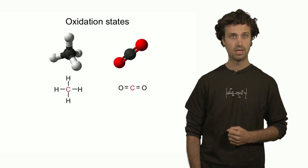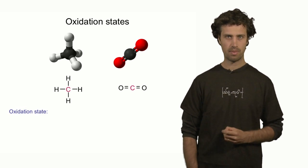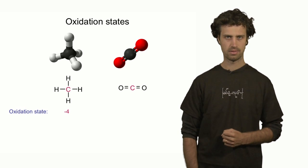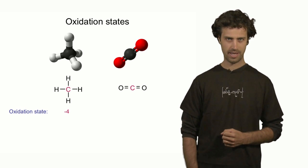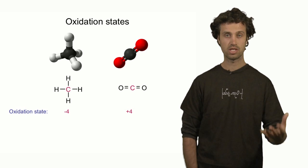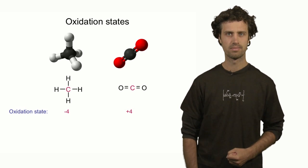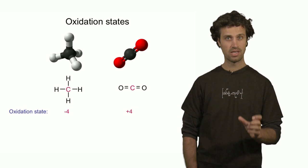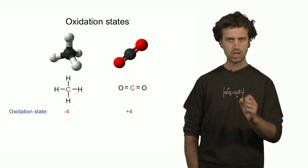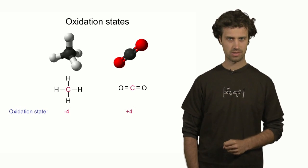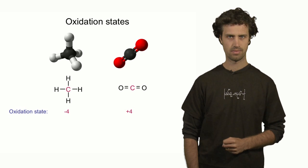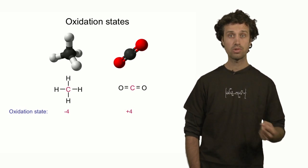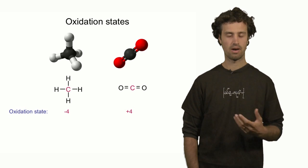For instance, the oxidation state of the carbon atom in methane is minus four. The oxidation state of the carbon atom in carbon dioxide is plus four. The differences in these two values reflects the differences in the nature of the bonds in these molecules. In this segment, we will learn how to determine the oxidation states of atoms.